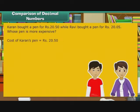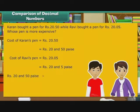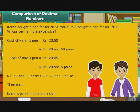The cost of Karan's pen is Rs. 20.50 and the cost of Ravi's pen is Rs. 20.05. Since Rs. 20.50 is greater than Rs. 20.05, therefore Karan's pen is more expensive.